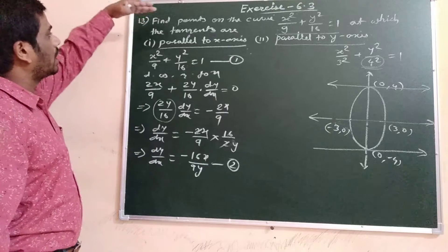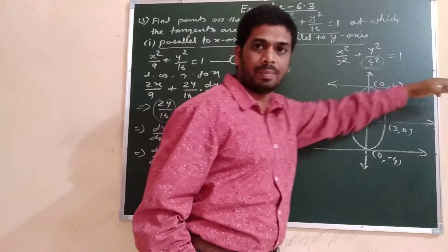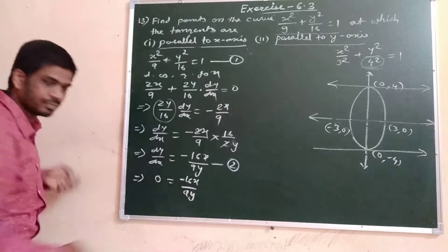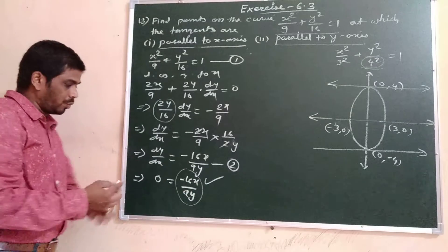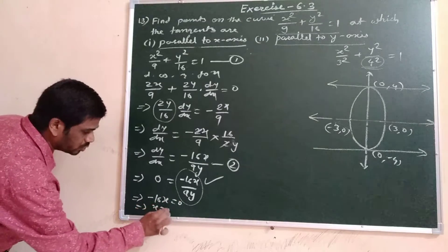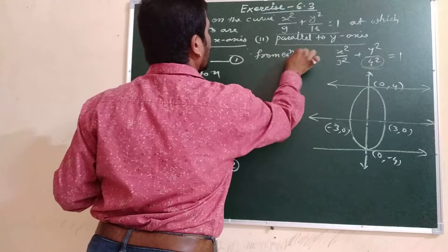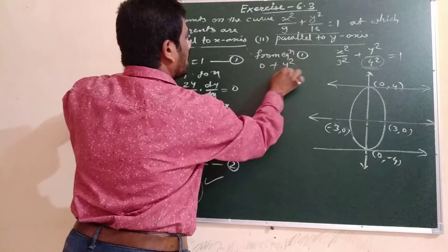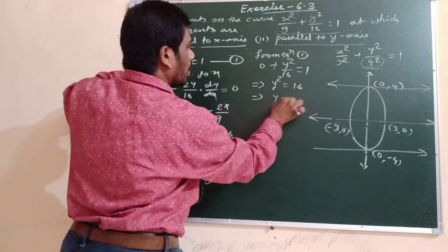Since the tangent is parallel to the x-axis, the slope dy/dx = 0. Setting −16x/9y = 0, the fraction equals zero when the numerator is zero, so −16x = 0, giving x = 0. Substituting x = 0 into equation 1: y²/16 = 1, so y² = 16, giving y = ±4.